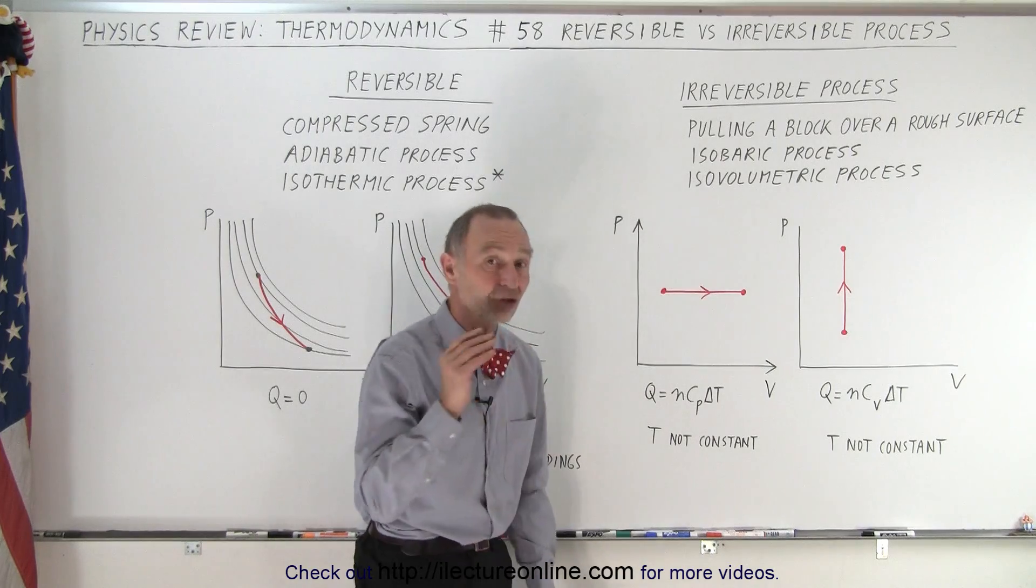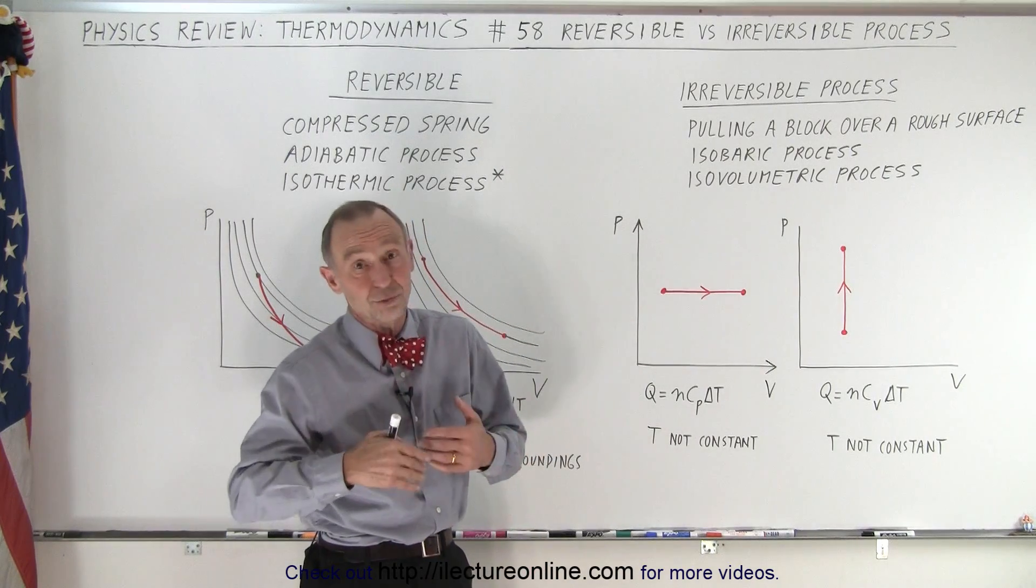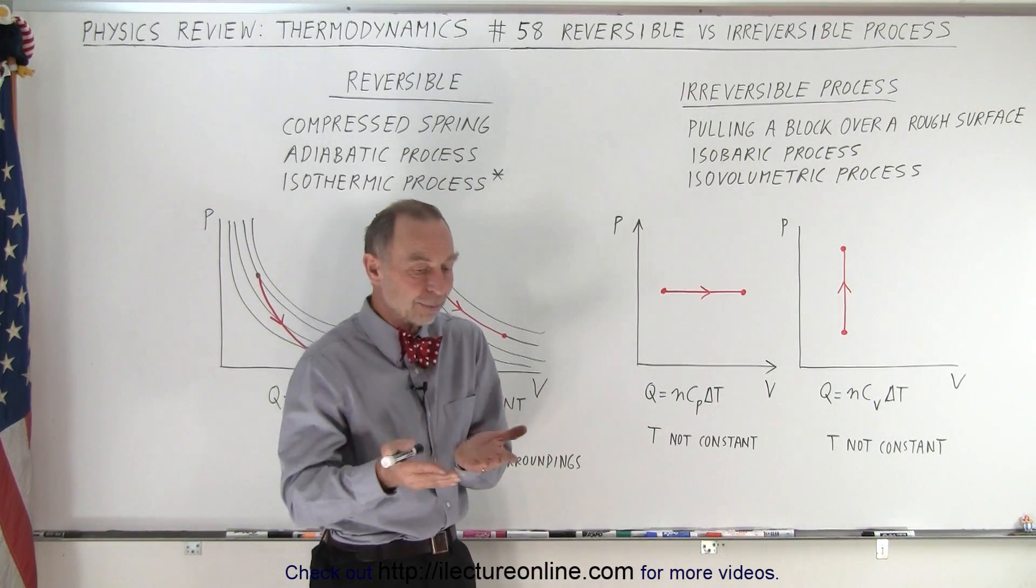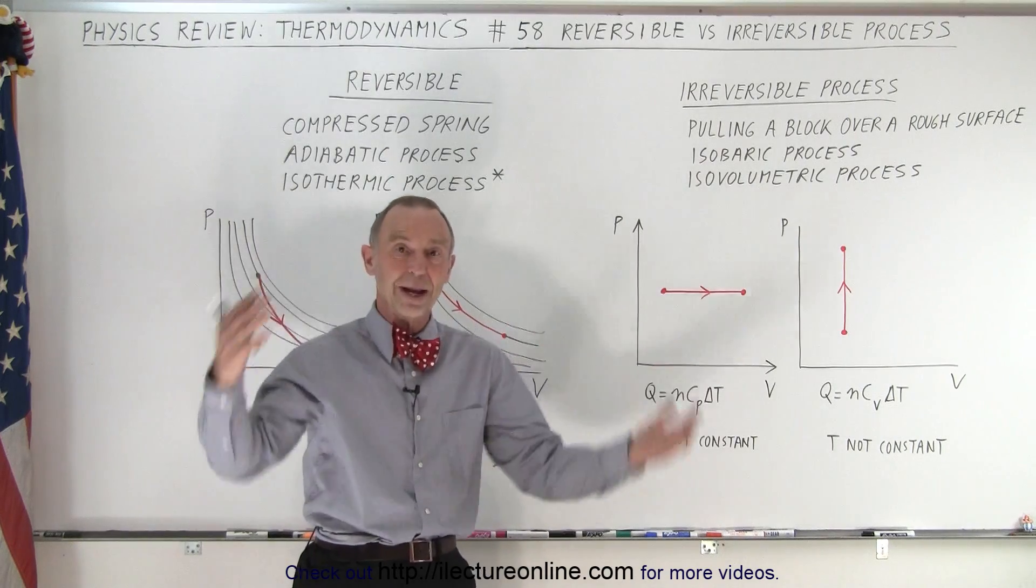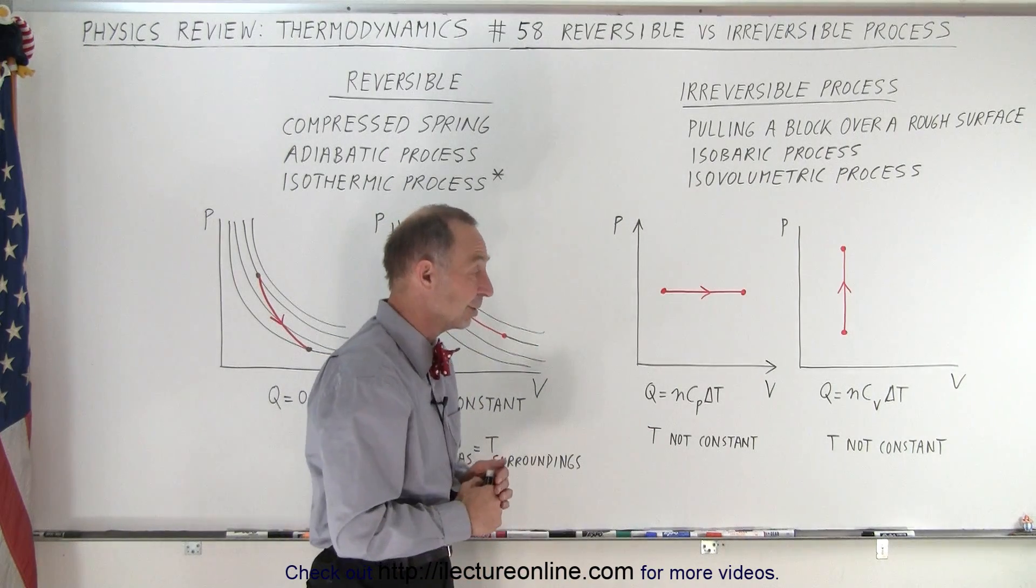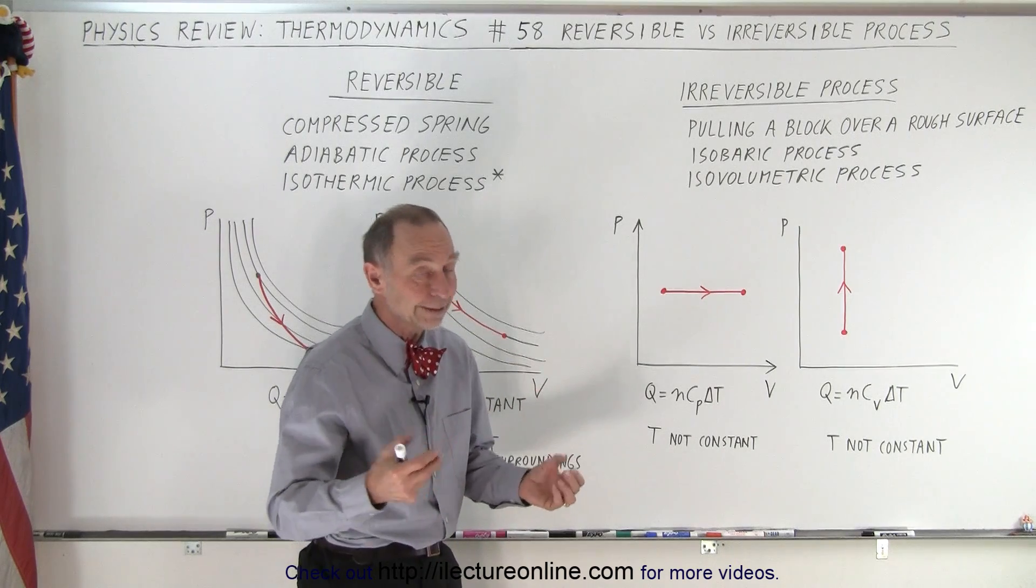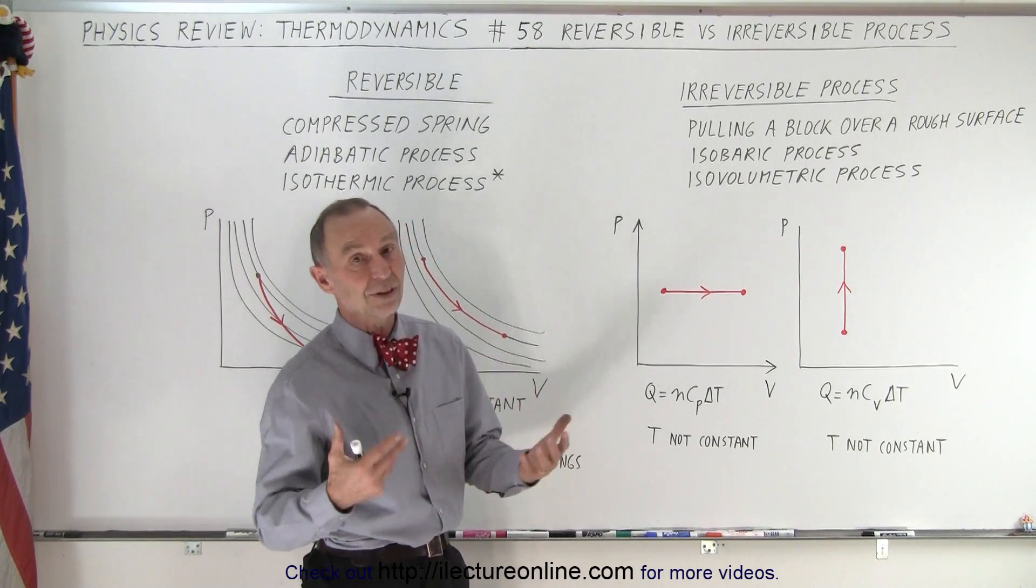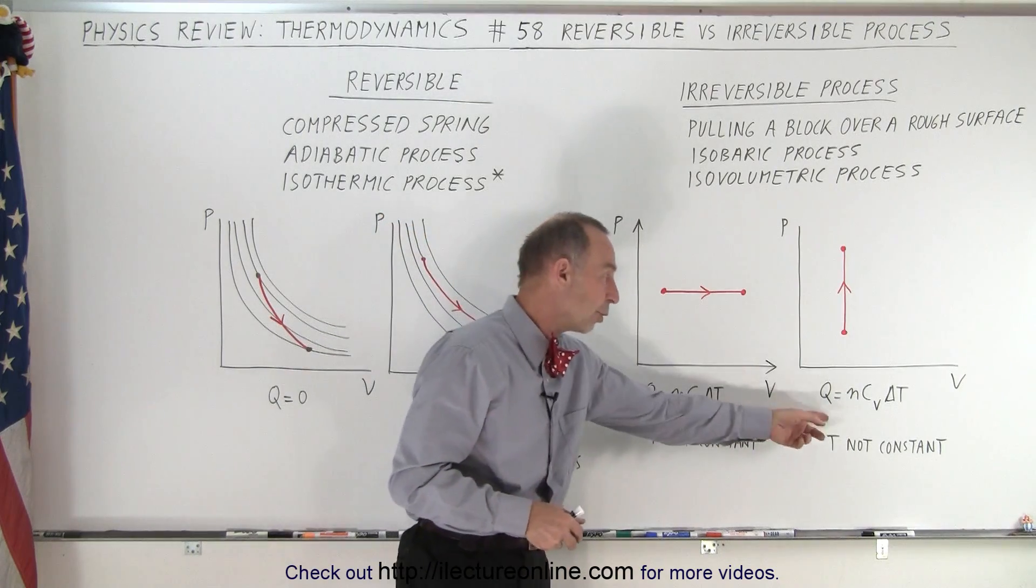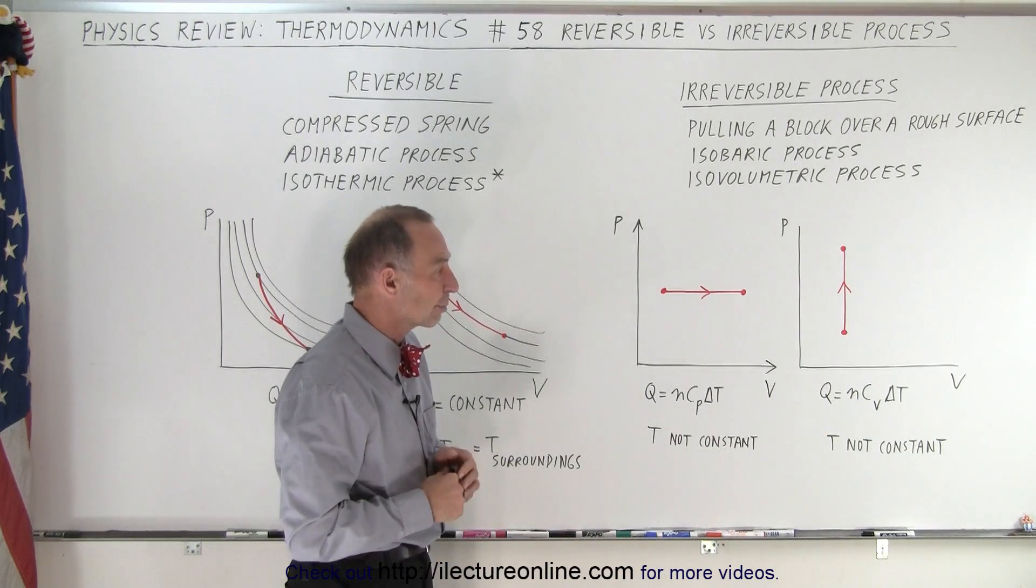So we see that the temperature of the gas changes, and because of that it would be very difficult to keep the temperature of the gas the same as the temperature of its surroundings. Therefore, as the heat is being exchanged since the temperature is different, you're going to have an increase in entropy - and the same for the isovolumetric process.